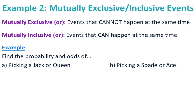Let's look at mutually exclusive or mutually inclusive events. Mutually exclusive events are events that cannot happen at the same time. Mutually inclusive events are events that can happen at the same time. For or-probabilities with mutually exclusive events, I can find the individual probabilities and add them together.